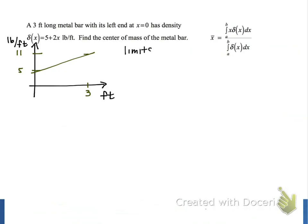Since the bar is 3 feet long and the left end is at x equals 0, our limits of integration are from a equals 0 to b equals 3. Our graph doesn't really give us a picture of this bar itself, but it does show us that the density of the bar increases from 5 pounds per foot to 11 pounds per foot as we move from the left end of the bar to the right end of the bar.